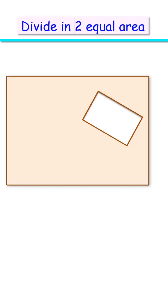We have a rectangular sheet with a rectangular hole of unknown dimension. The exciting part is to find the straight line along which this rectangular sheet can be cut so that it is divided into two equal areas.